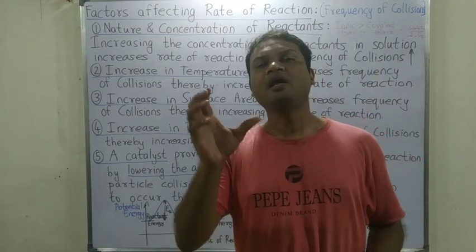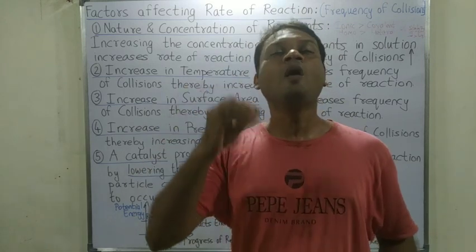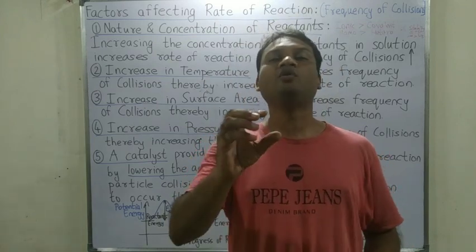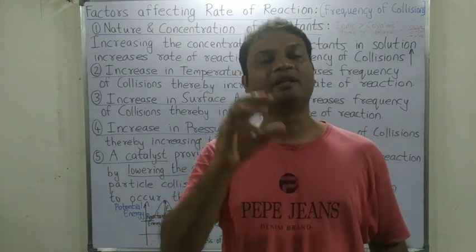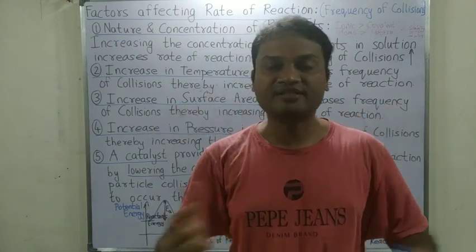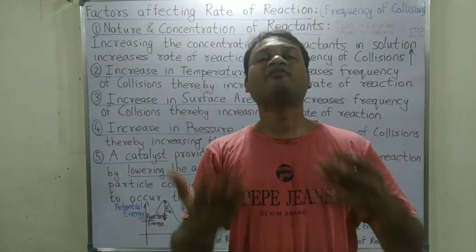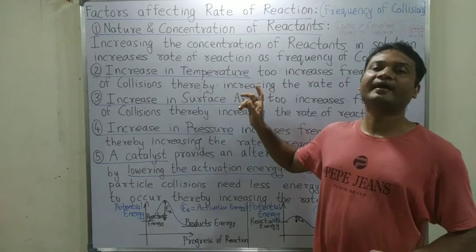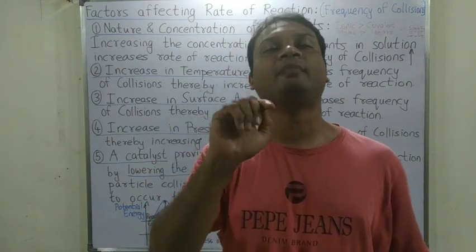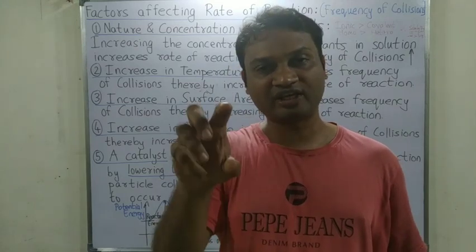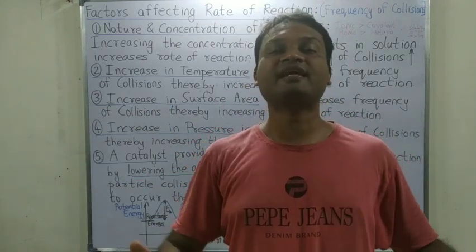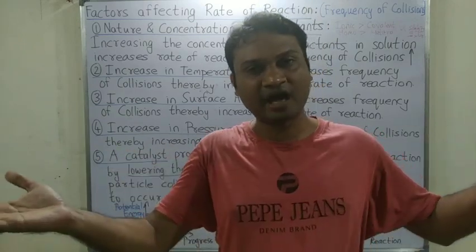The third factor is surface area. If we compare a crystal or lump form with a powder form, the powder dissolves faster. This is because powder has a much greater surface area than a large crystal or lump. More surface area means more contact with the surrounding molecules, leading to more collisions.